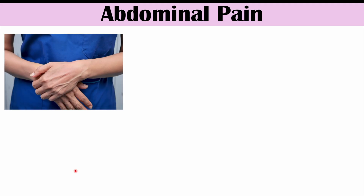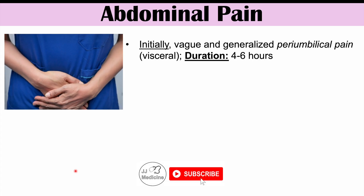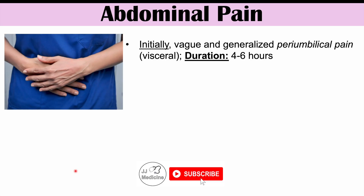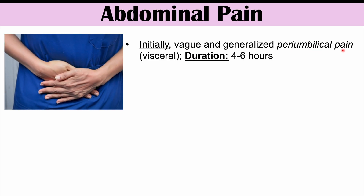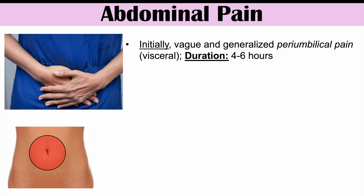One of the first findings we can see in appendicitis is abdominal pain. There's actually one symptom that may occur prior to abdominal pain, which we'll discuss next. But I want to discuss abdominal pain first because this is often a classic finding. Initially, when a patient starts to get some inflammation of the appendix, they're going to start off with a sensation of a vague and generalized periumbilical pain — around the belly button. The patient can't quite pinpoint where the pain is. The duration of this pain is generally anywhere from four to six hours.